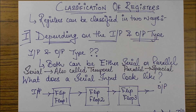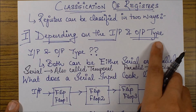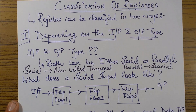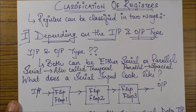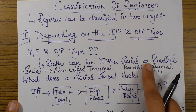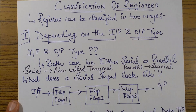First of all, we deal with the classification of resistors. Resistors can be broadly classified in two ways. First is depending on the input and the output — what type of data you are inputting into the register and in which form you are taking the data as an output. Both can be either serial or parallel.